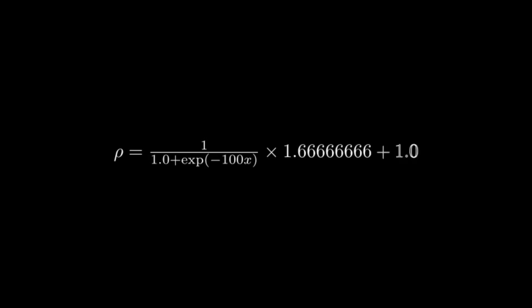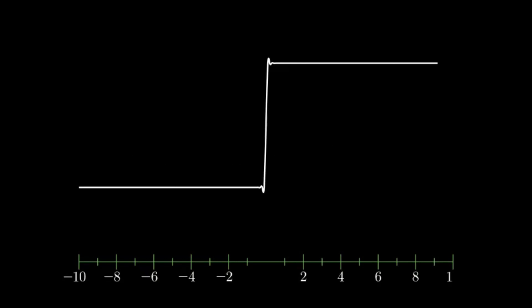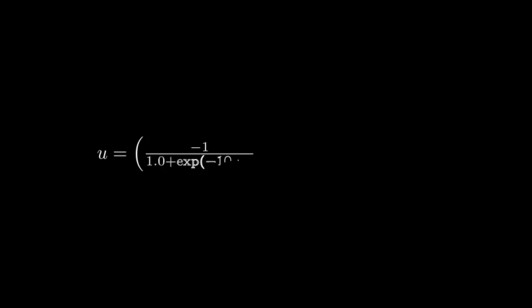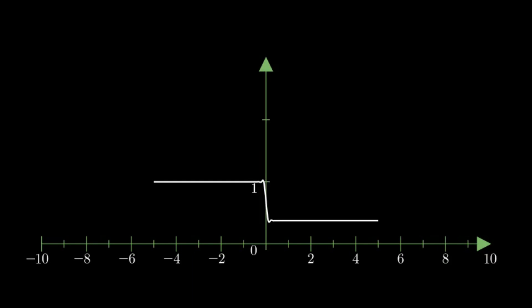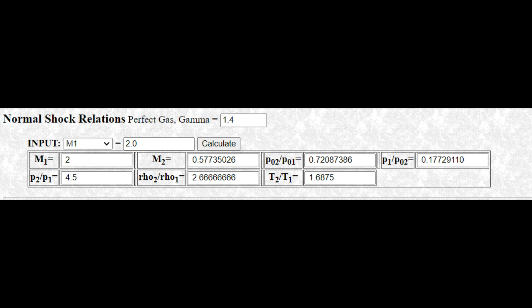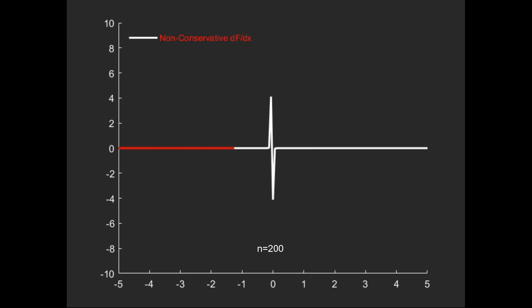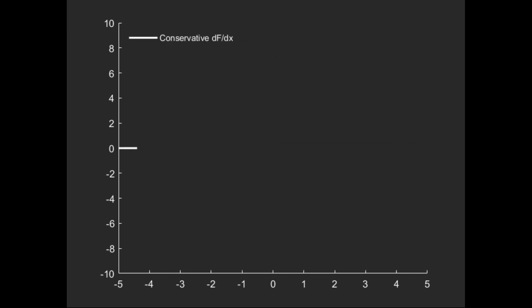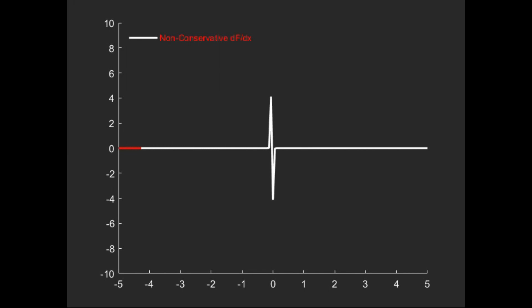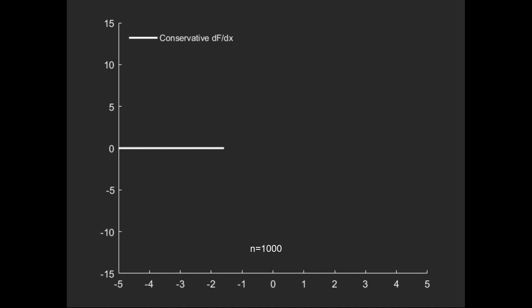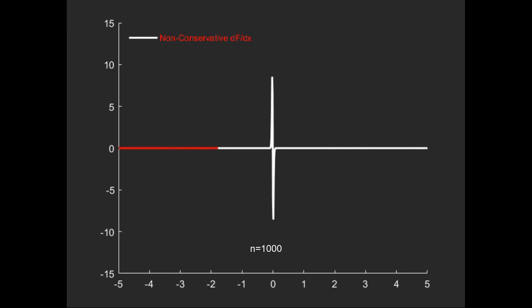Now we consider a problem with a shock-like structure. The density and velocity variations are approximate continuous functions of normal shock relations with an inflow Mach number of 2. Similar to the previous study, we compare the derivative of the flux obtained using conservative and non-conservative approximations using 200 grid points. It is clear that the non-conservative form has issues calculating the derivative across shocks — it may produce a wrong shock speed or oscillations. Increasing to 1000 grid points, the non-conservative solution is closer to exact but still produces overshoots compared to the conservative form.